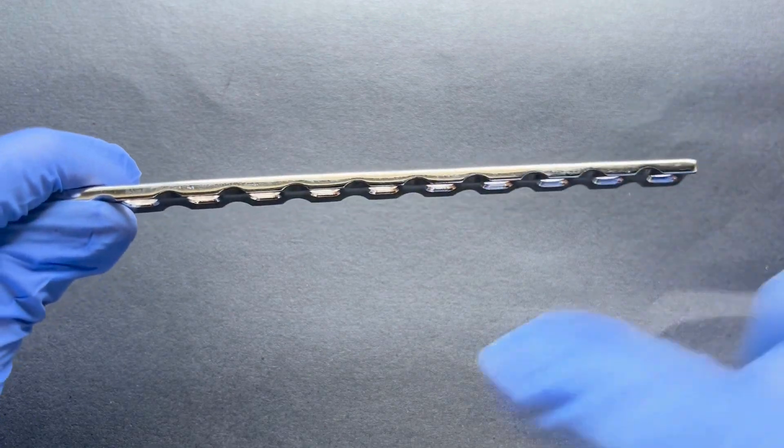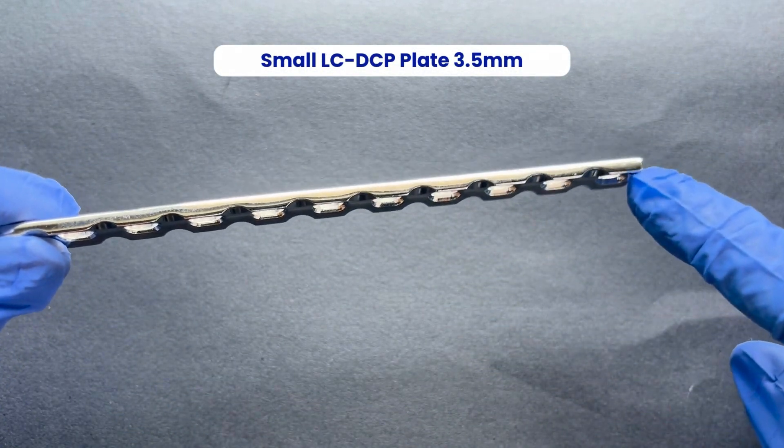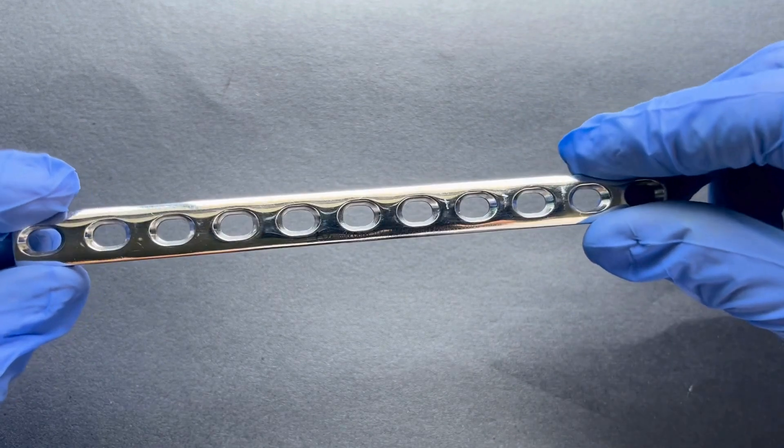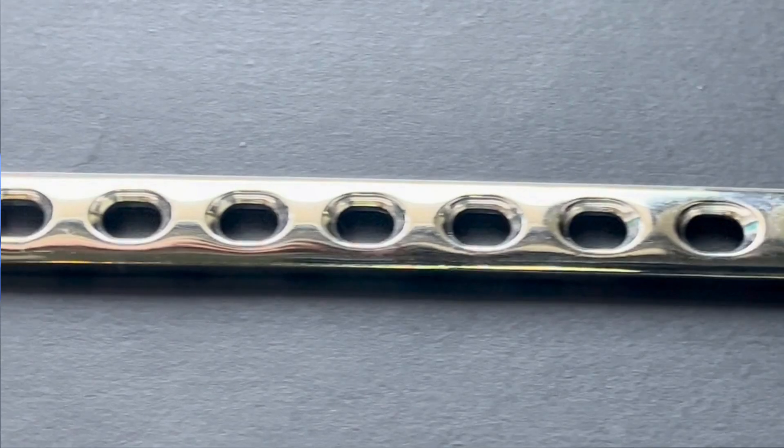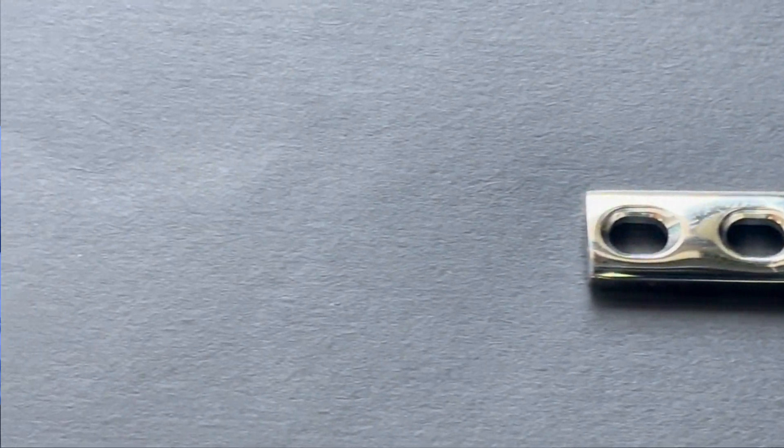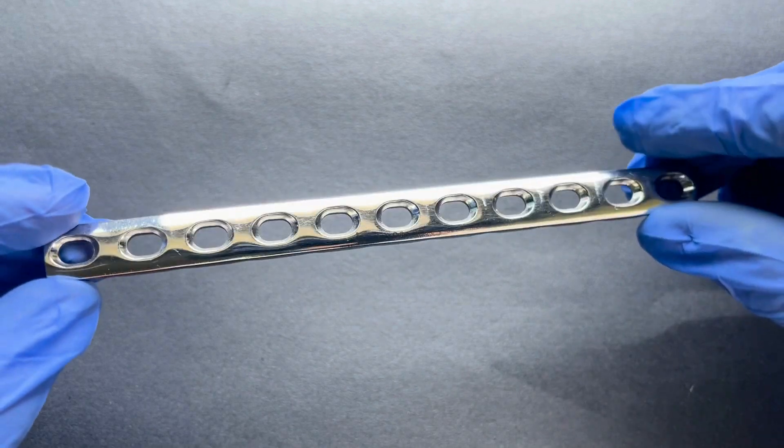Next in line is the 3.5mm small LCDCP plate. It combines limited contact design with dynamic compression for smaller bones. It reduces periosteal disruption while achieving strong interfragmentary compression.